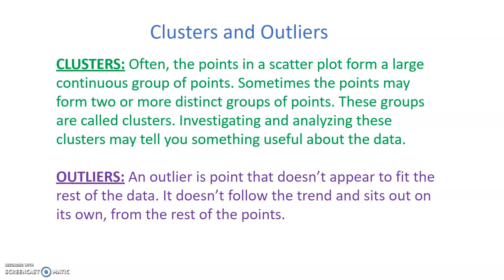In scatter plots you can get things called clusters and outliers. A cluster is a group of points that is separate from another group of points that still follows the trend of your scatter plot. An outlier is a point that doesn't follow that trend. It sits outside on its own. So let's have a look at what they both look like.